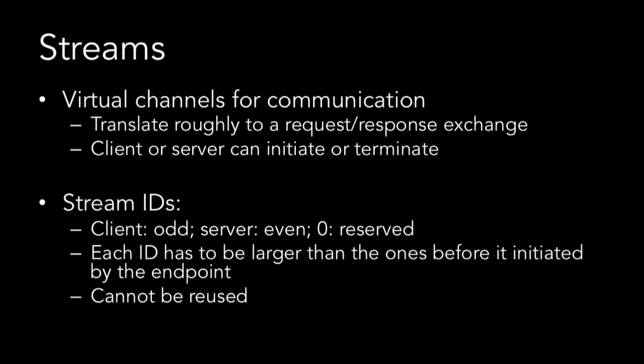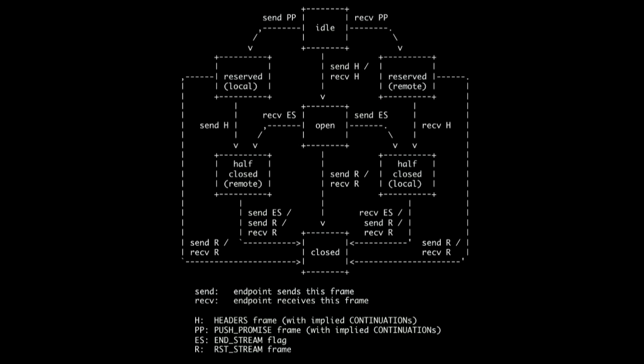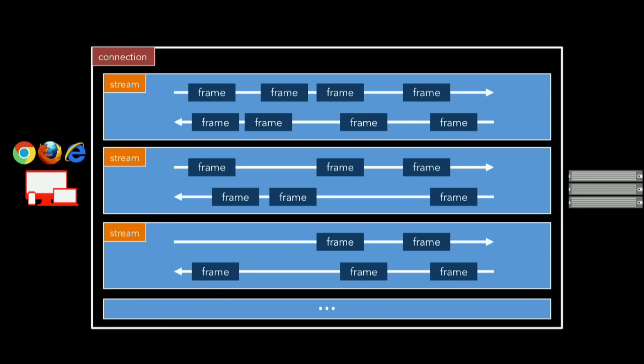The basic rules are: each ID generated from each side has to be bigger than the ones before it, and you can't reuse stream IDs over a connection. With a 31-bit space, that's roughly 1 billion streams per endpoint over the lifetime of the connection. Streams are stateful — H2 is a very stateful protocol, gone is the statelessness of H1. The smallest unit of communication in H2 is called a frame. Everything that happens between client and server happens with frames — each frame carries a stream ID and frames flow in either direction concurrently throughout the lifetime of the connection.